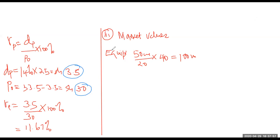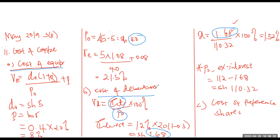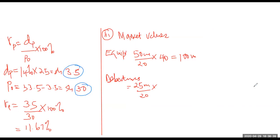For the market value of debentures: par value is 20, total nominal value is 25 million, giving 1.25 million debentures, multiplied by the ex-interest market value of 110.32, giving 137.9 million. For preference shares: total nominal value is 15 million, par value 25, giving 600,000 shares, multiplied by the ex-dividend price of 30, giving 18 million. Total market value = 100 + 137.9 + 18 = 255.9 million.